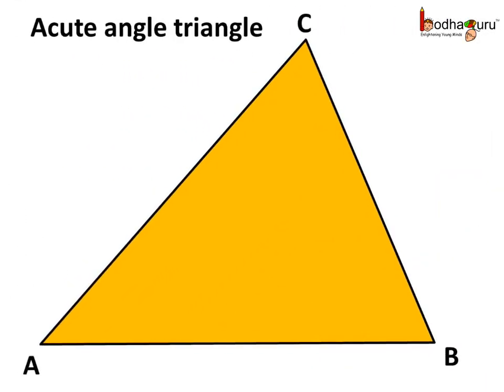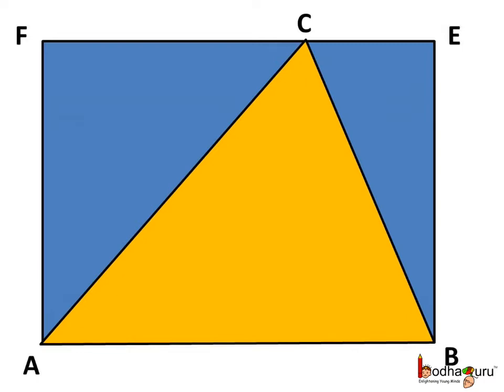What about the area of other triangles? Here we see there is an acute angle triangle, which means all the angles are less than 90 degrees. We can show triangle ABC as part of this rectangle ABEF. The width of this rectangle is the same as the height of this triangle. Now we draw a perpendicular on AB, which is the base of the triangle, from C. CD is actually the height of triangle ABC.